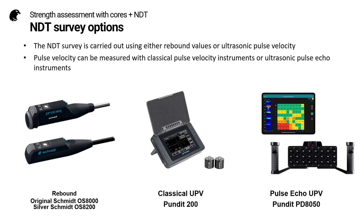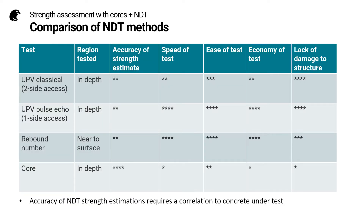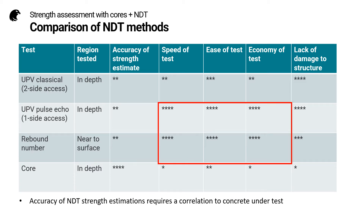When it comes to the NDT survey, it can be carried out using either rebound values or ultrasonic pulse velocity. We have two options for pulse velocity measurement: classical UPV or pulse echo UPV. This table shows the relevant merits of the NDT methods. There is a similar table in EN 13791 using the core test as a reference; I have updated it to accommodate the pulse echo method, which has only recently become standardized. With pulse echo, the speed and economy of the UPV measurement is now comparable with that of the rebound hammer test, as it has become a one-man job with no need to draw and align a grid on both sides of the element under test. For more information, please visit the Screening Eagle Technologies website.